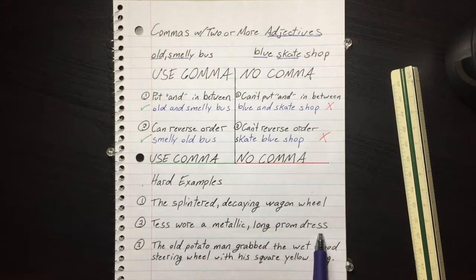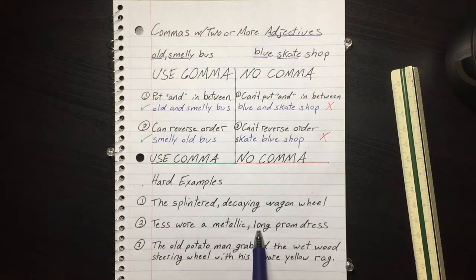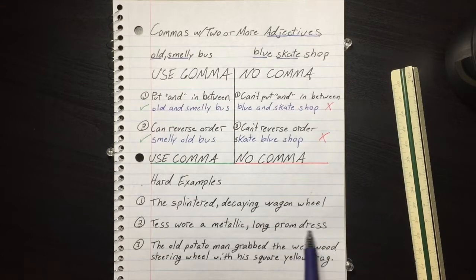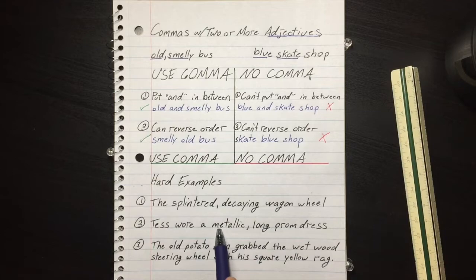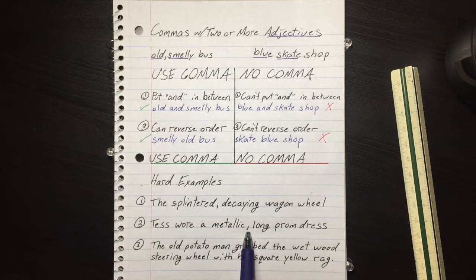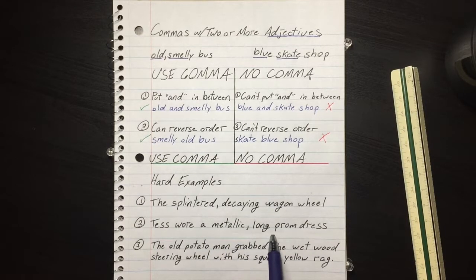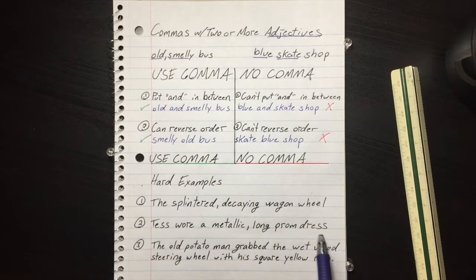Tess wore a metallic long prom dress. Metallic and long and prom all describe the dress. It's a prom dress, not just a dress. So between metallic and long, that passes the test, so it gets a comma. Between long and prom, doesn't pass the test. No comma.